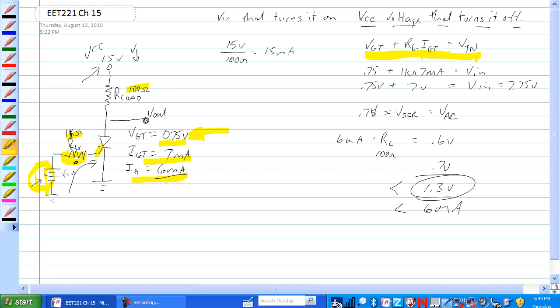It's 0.75 volts plus 1K ohm times 7 milliamps is equal to VN. So we got 0.75 volts plus 7 volts. So VN has to equal 7.75 volts.